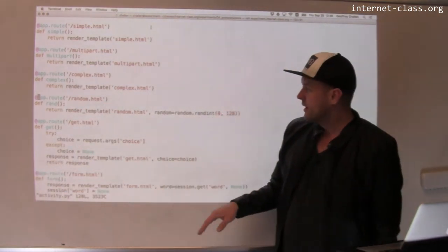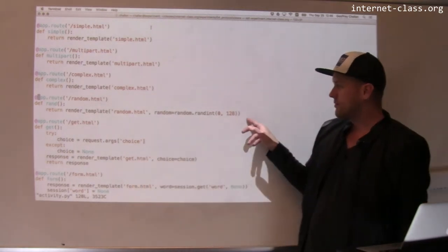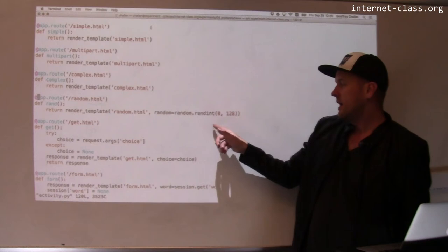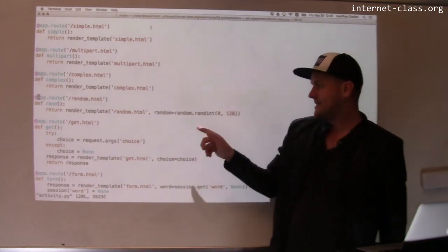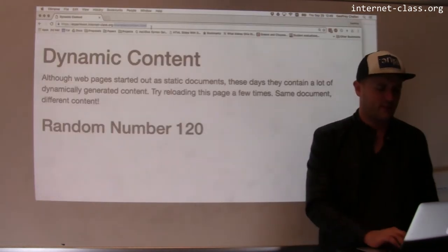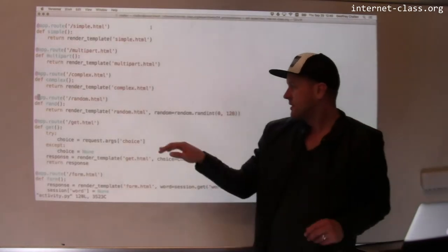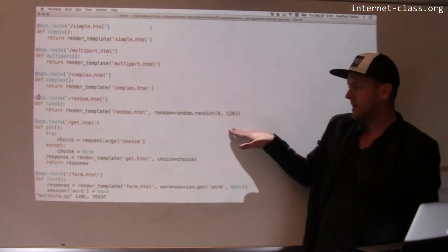And what does this function do? The random number comes in right here. So this is Python code that generates a random integer between 0 and 128.